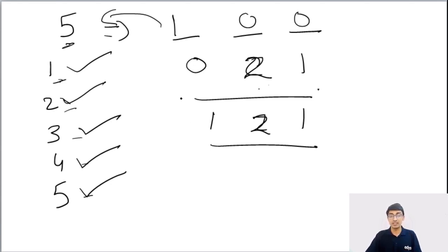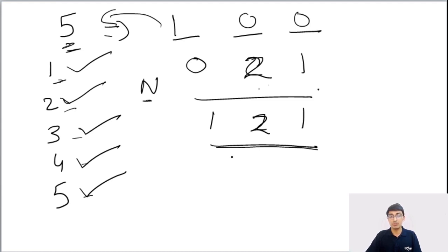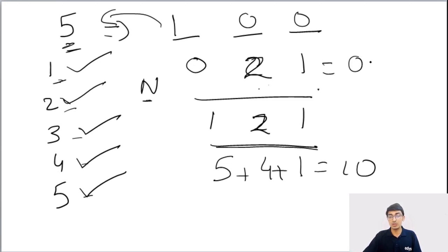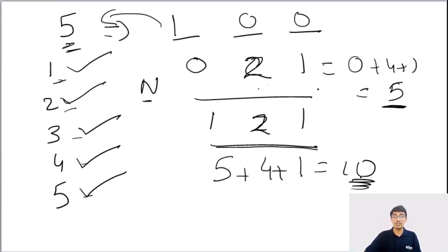The question has a second part: whichever configuration of coins you take, it must form all numbers up to n. Also, the maximum number that can be formed by the given coins should not exceed n. With (1, 2, 1) — one 5-rupee, two 2-rupee, one 1-rupee — the maximum we can form is 5 + 4 + 1 = 10. But with (0, 2, 1), the maximum is 0 + 4 + 1 = 5. Hence, (0, 2, 1) is the optimal solution for n=5.